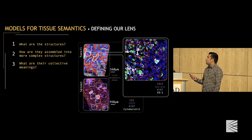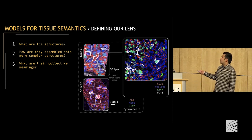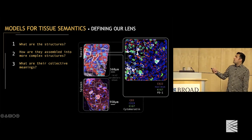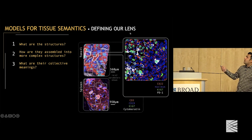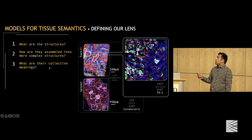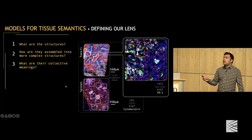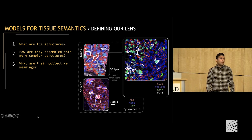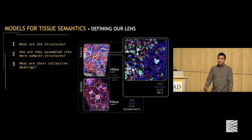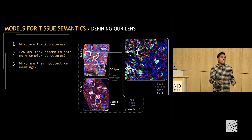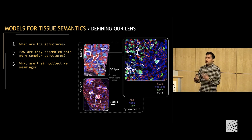We can zoom into our tissues and see single cells and their patterns of expression. But there are other structures visible at other granularities and in other modalities. These structures that we see in tissues don't exist in isolation — they're actually assembled into the complex tissues that we see. So one question is: how are they assembled into these more complex structures?